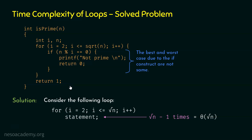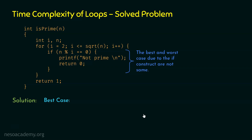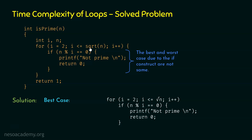Let's do the best case analysis first. In this for loop, in place of the sqrt function in the condition, we use the square root symbol. The best case occurs when this condition inside the if construct is satisfied. When this condition is satisfied, the return 0 statement executes and the loop terminates abruptly — this means the loop will not run from i equals 2 up to square root of n, it will run less than square root of n times. Let's assume some value of n. We know this condition is satisfied when n is not a prime number, so let's assume n equals 16, which is not a prime number.